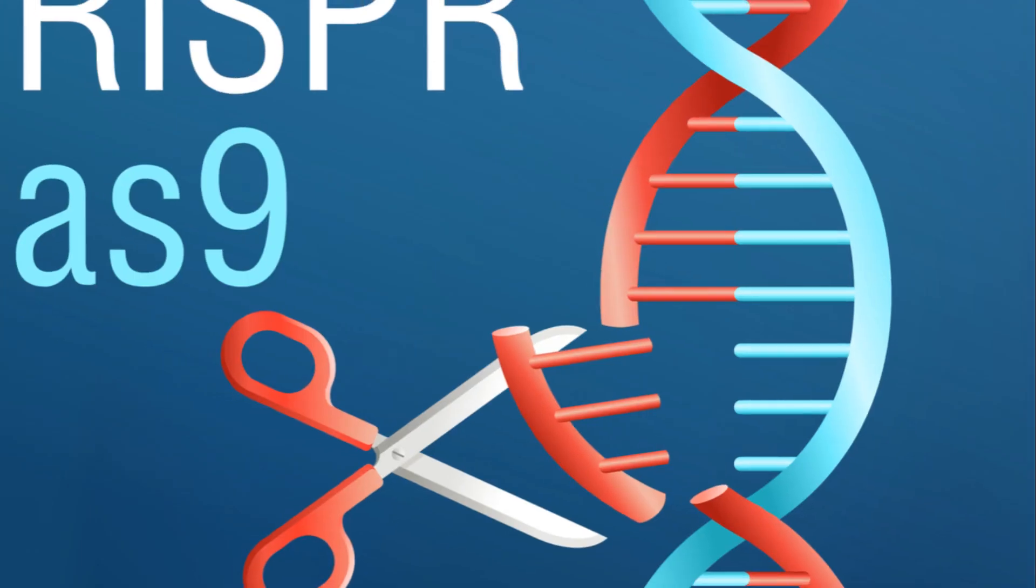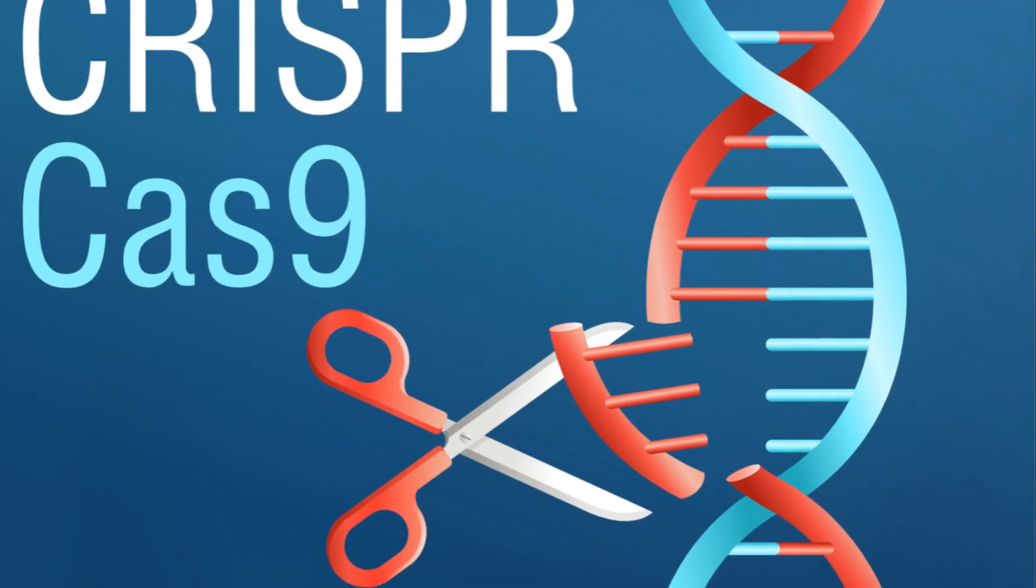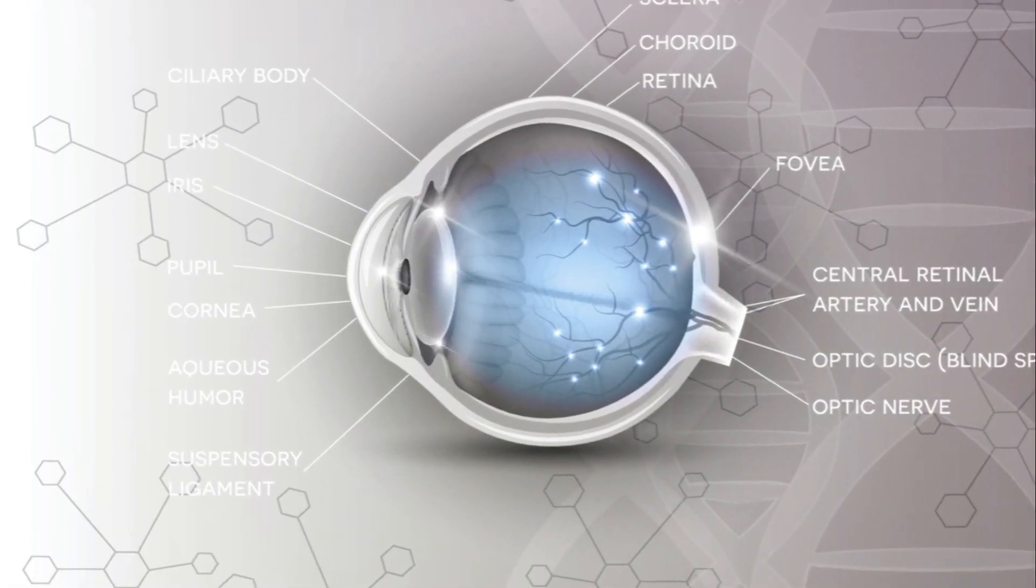CRISPR, or clustered regularly interspaced short palindromic repeats, is a revolutionary tool that acts like precise molecular scissors, allowing scientists to edit genes with unprecedented ease and accuracy.